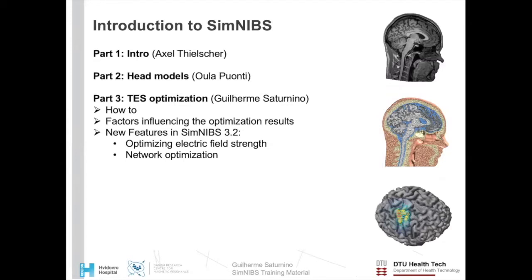In the first part of the series, Professor Axel Thielscher gave an introduction to the physics of transcranial electrical and magnetic stimulation and showed how to run simulations in SimNIBS. In the second part, Dr. Oula Puonti showed how to create head models from MRI images and how to do quality control. In this part, I will show how we can use SimNIBS to optimize transcranial electrical stimulation montages, which factors influence optimization results the most, and some new features coming up in SimNIBS 3.2: electric field strength optimization and network optimization.